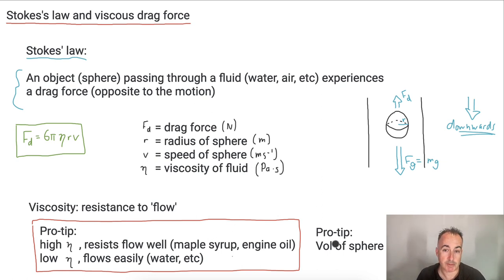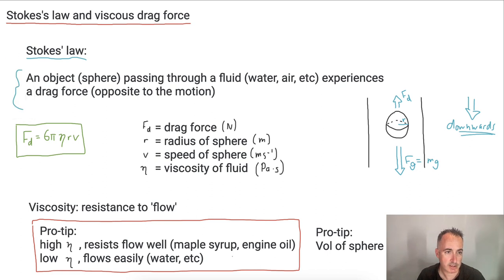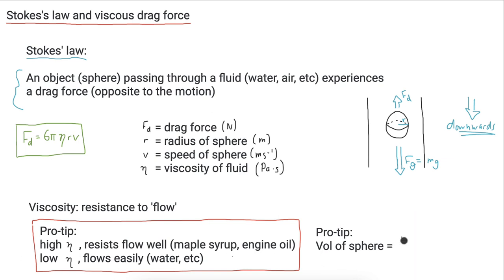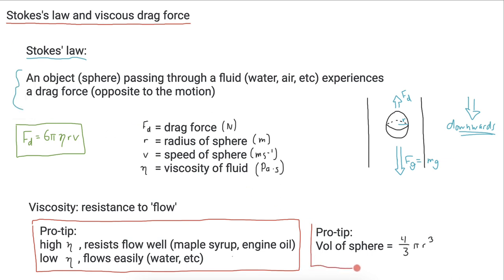Pro tip: it helps to know what the volume of a sphere is. You don't have to memorize it — it's on your formula booklet — but the volume of a sphere is four-thirds pi r cubed. In case you need it, that's nice to know.